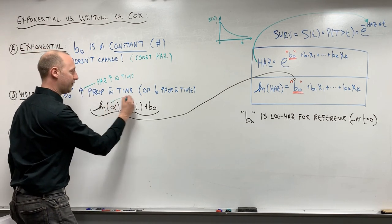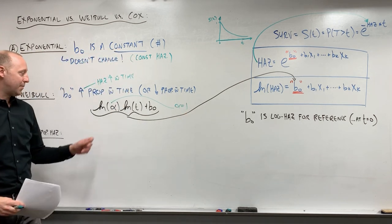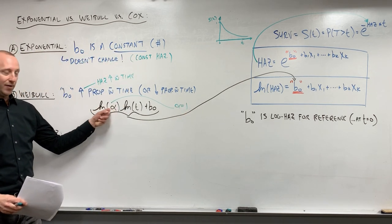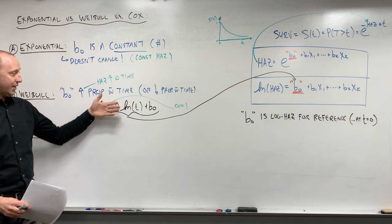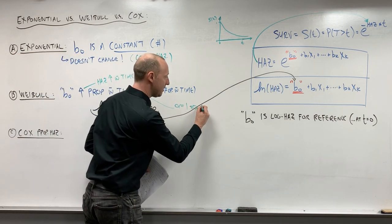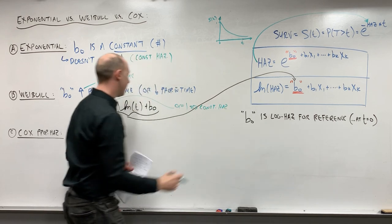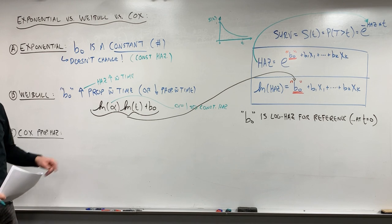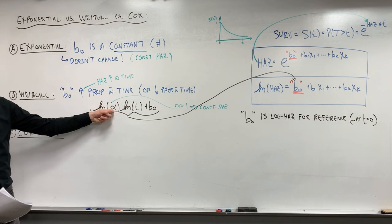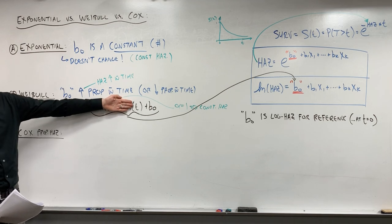And we can add here, if alpha equals 1, what's going to happen? The log of alpha, right, the log of 1 is 0. This is all going to disappear. So alpha equals 1 means we're working with a constant hazard. This collapses to being the exponential model. Right? Again, if you put alpha of 1, log of 1 is 0, all this is going to disappear.